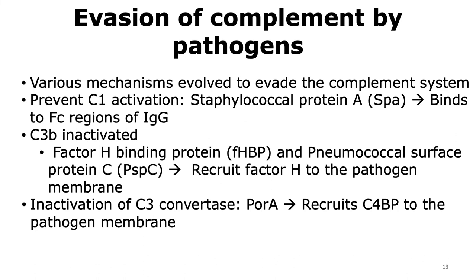Another way pathogens use to protect themselves is by deactivating the C3 convertase. The protein POR A is able to recruit the C4-binding protein to the pathogen membrane. The C4-binding protein binds to C4B and releases C2A from the C3 convertase complex, so the C3 convertase is unable to function and thus the pathogen is able to protect itself.